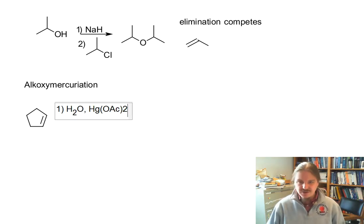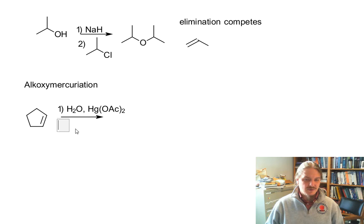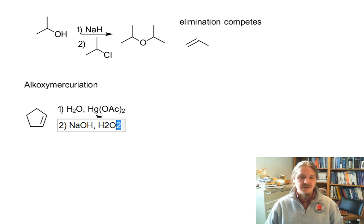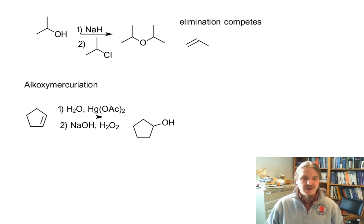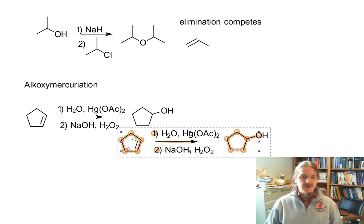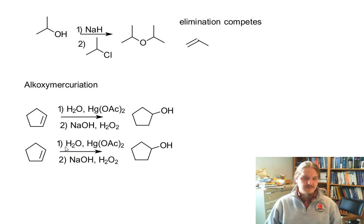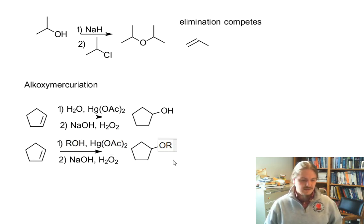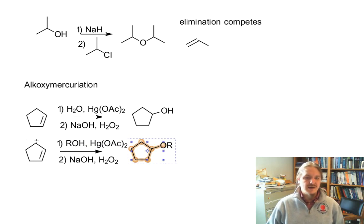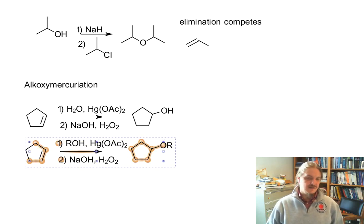In the oxymercuriation reaction, we react an alkene with water and mercury acetate, followed by reduction in aqueous base with hydrogen peroxide to generate an alcohol. This reaction works really well if, instead of water, we switch it to an alcohol in the first step, and we get an ether out, having an alcohol as the initial nucleophile.